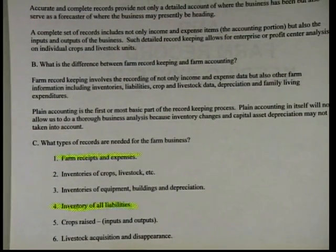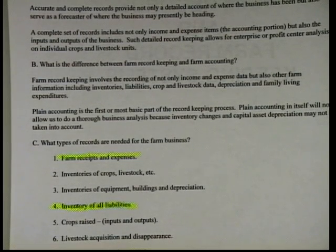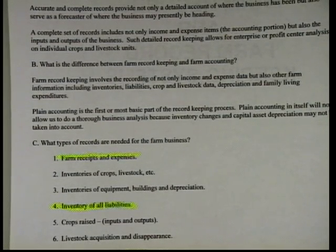Back to number one — farm receipts and expenses. I had a gentleman this year who switched loan officers and switched banks, and unbeknownst to him, they were just taking his corn check deposits and putting them right on his operating loan. When I got to helping edit his checking account transactions, he had no actual income accounted for in his accounting system — it was just going right to the bank. We have to take that money into your checking account and then transfer it to pay the loan. That's a nightmare, and it was easier for the bank, but it's totally wrong.